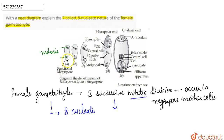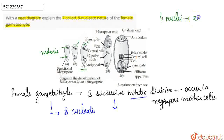When mitosis occurs in both of them, they give rise to four cells — two at the micropylar end and two at the chalazal end. Then with further successive division, as in path C, it becomes 8-nucleate, wherein we can see four nuclei at each end: four at the micropylar end and four at the chalazal end.